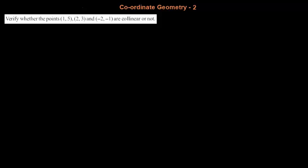In this video, we are going to solve a problem related to coordinate geometry. The question is: verify whether the points (1,5), (2,3), and (-2,-1) are collinear or not.